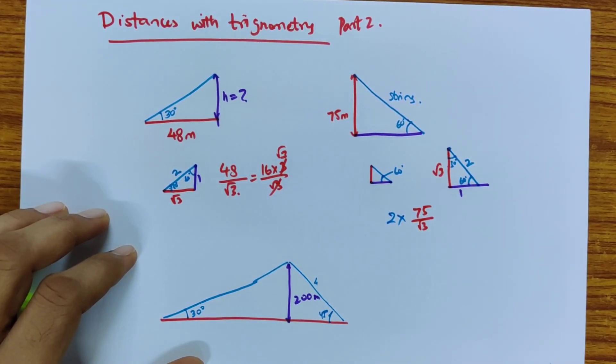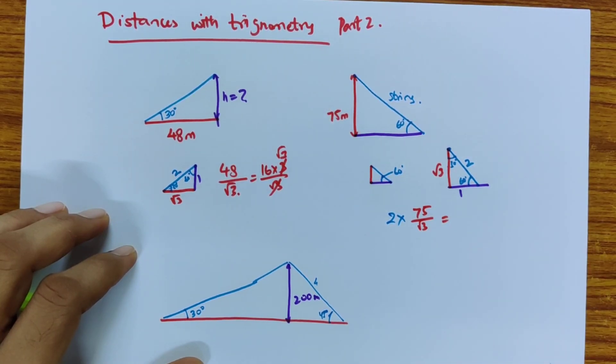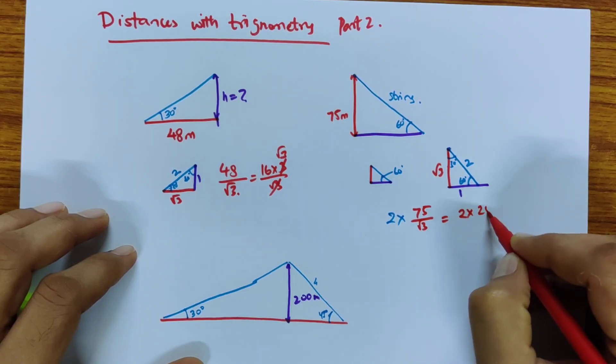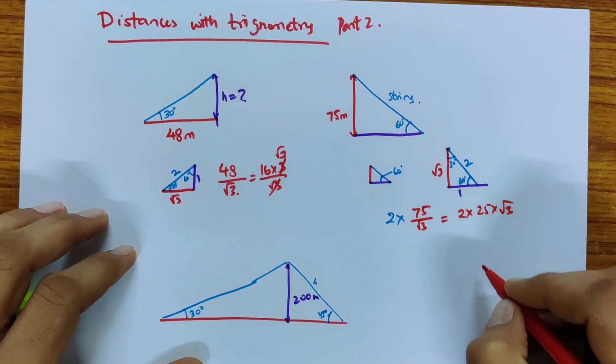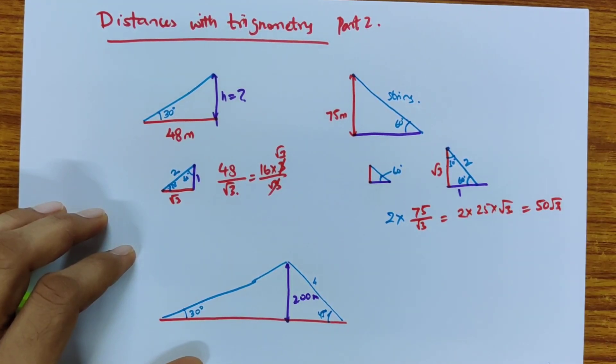So this will give me 75, which is 25 times 3. So that is 2 times 25 times 3 and root 3 like last time will get cancelled. This will become root 3, so this is 50 root 3.